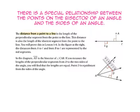There is a special relationship between the points on the bisector of an angle and the sides of the angle. The distance from a point to a line is the length of the perpendicular segment from the point to that line — also the length of the shortest segment from a point to the line. In this figure, the distances from point A and point B to line L are represented by perpendicular segments. In this diagram, ray AD is the bisector of angle CAB. Measuring the perpendicular segments from point D to ray AC and from point D to ray AB, point D is equidistant from both rays.